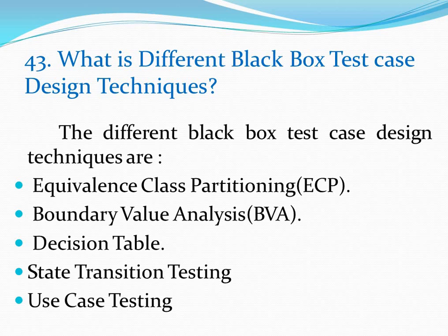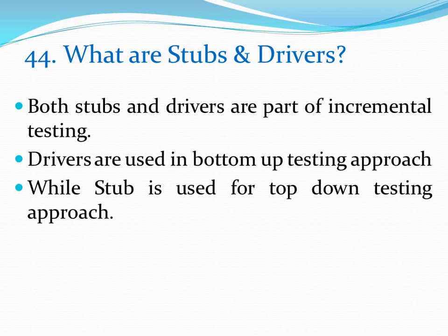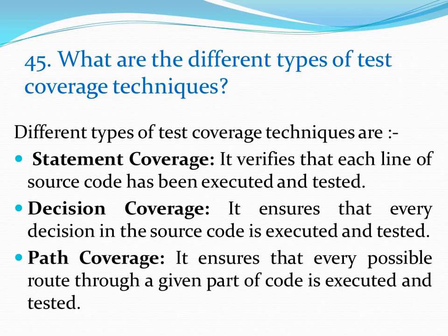What are the different black box test case design techniques? They are: equivalence class partitioning, boundary value analysis, decision table, state transition testing, and use case testing. What are stubs and drivers? Both stubs and drivers are part of incremental testing. Drivers are used in the bottom-up testing approach while stubs are used for the top-down testing approach. What are the different types of test coverage techniques? Statement coverage verifies that each line of source code has been executed and tested. Decision coverage ensures that every decision in the source code is executed and tested. Path coverage ensures that every possible route through a given part of code is executed and tested.